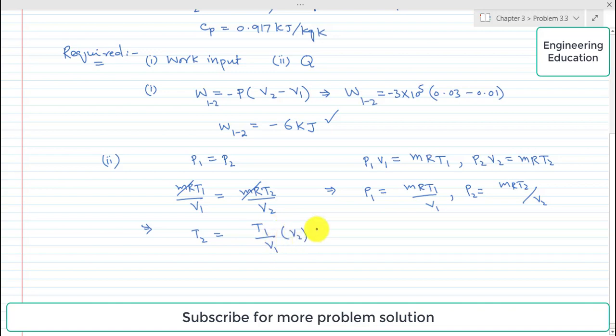Putting the values, T1 is 290, V2 is 0.03 and V1 is 0.01. Simplifying this, the value of T2 comes out 870 kelvin.